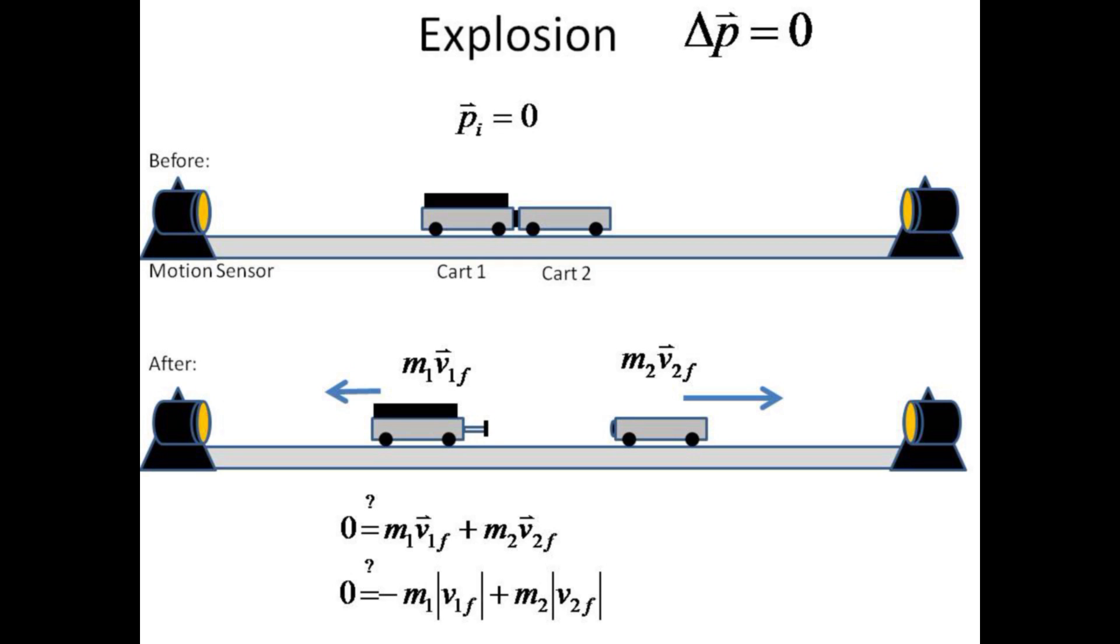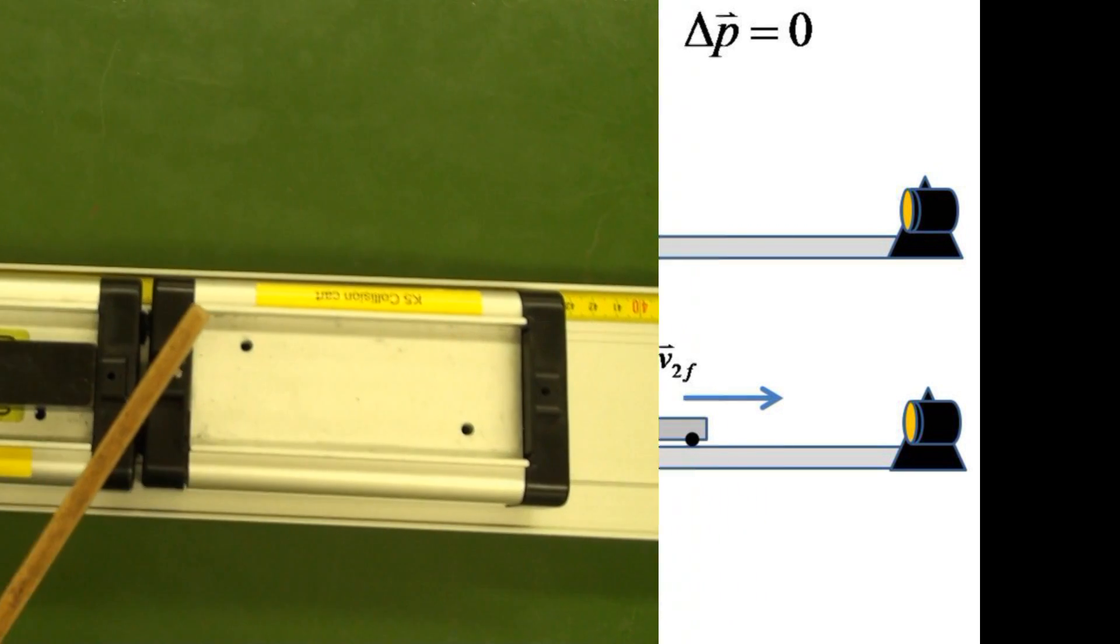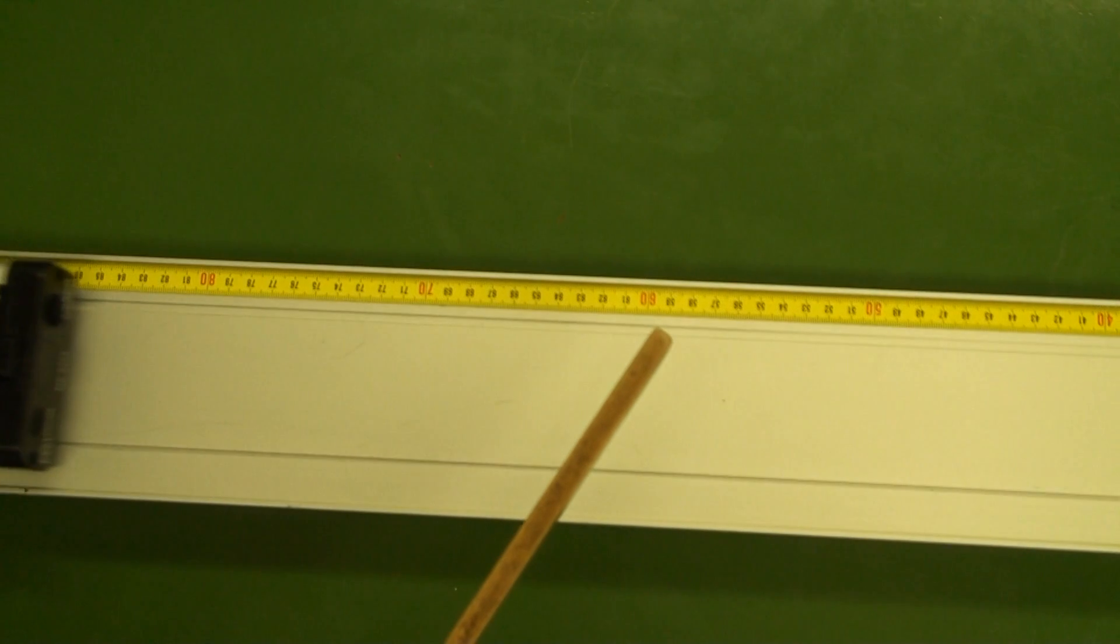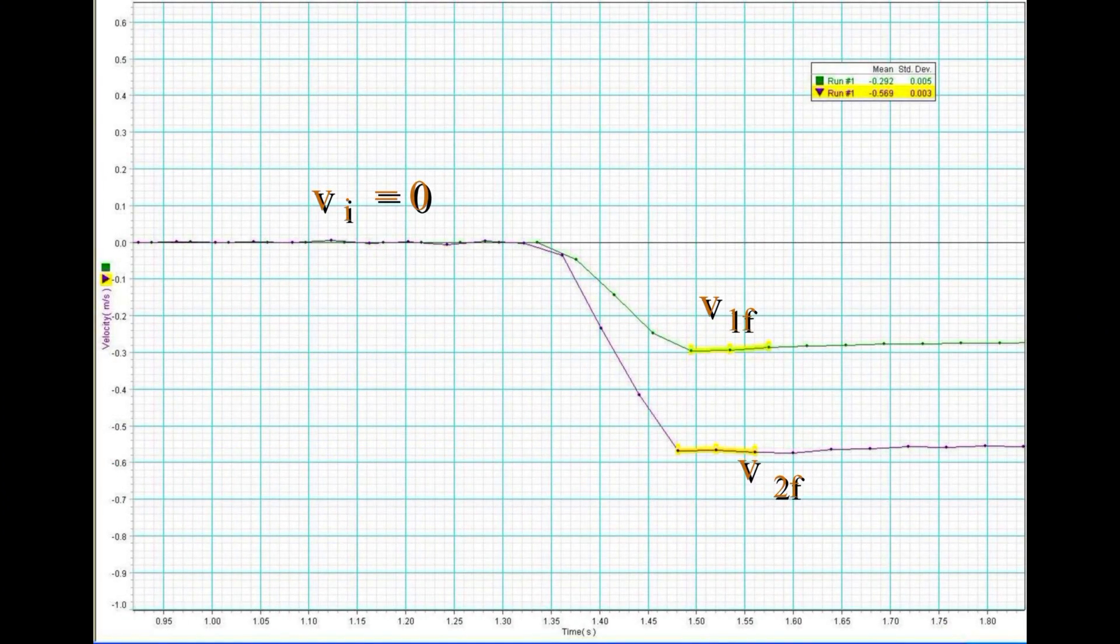The final experiment is an explosion of sorts. The two carts are at rest when a spring-loaded plunger is released, driving the two carts apart. Since the initial momentum is zero, the two carts leave the explosion with equal but opposite momenta. Once again, cart 2 will need the sign of its velocity changed to a positive value.